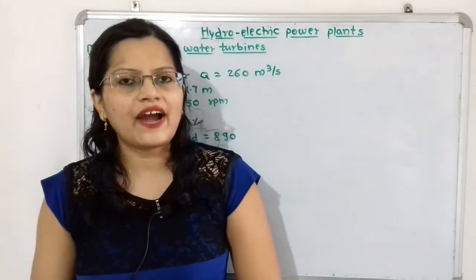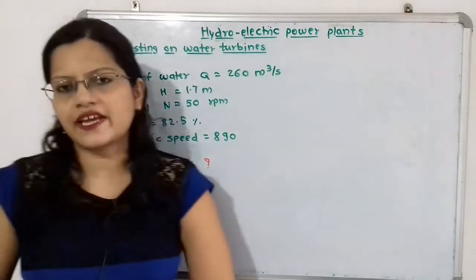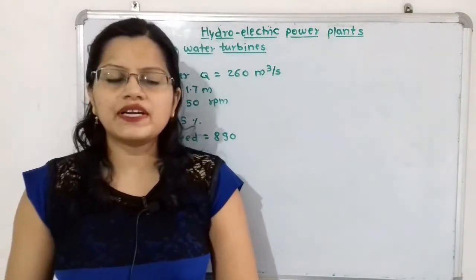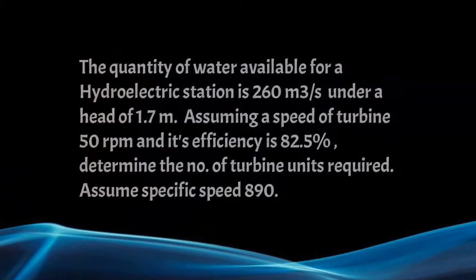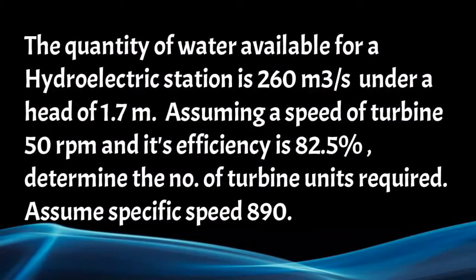In this video, we have to find out the number of turbine units required for the given data of the prototype unit. The given question is: a quantity of water available for a hydroelectric station is 260 cubic meters per second under a head of 1.7 meters. Assuming the speed of the turbine is 50 rpm and its efficiency is 82.5%, determine the number of turbine units required.